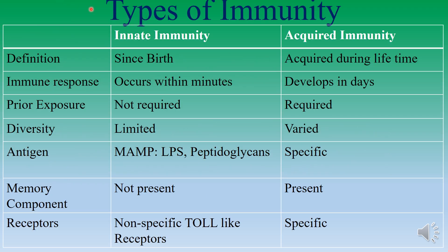Now let us look into the types of immunity. There are two types: innate immunity and acquired immunity. Acquired immunity is also known as adaptive immunity. By definition, innate immunity is the type of immunity present since birth, whereas acquired immunity is acquired during the lifetime. The immune response elicited by innate immunity is very quick — it occurs within minutes — whereas the immune response generated by acquired immunity takes many days to develop.